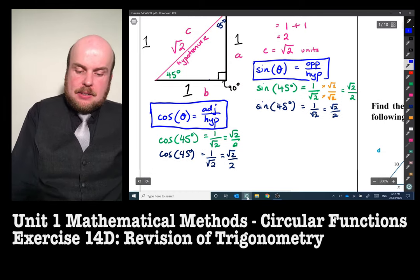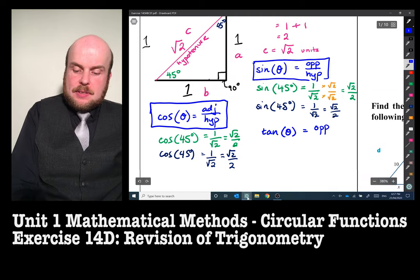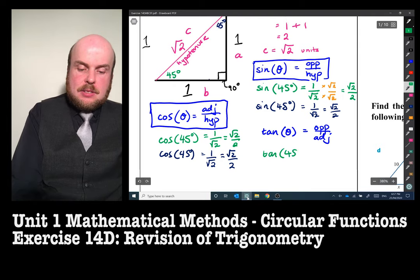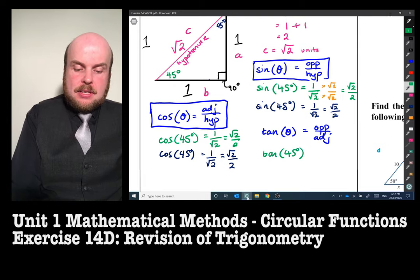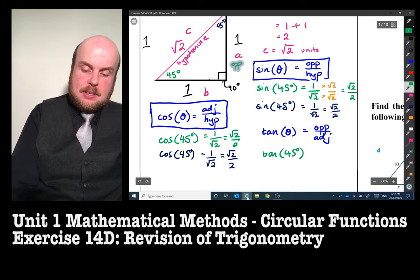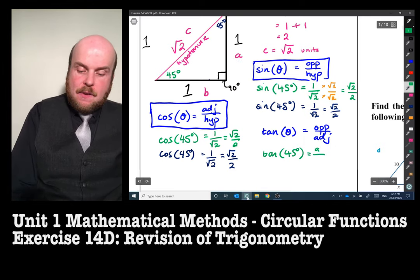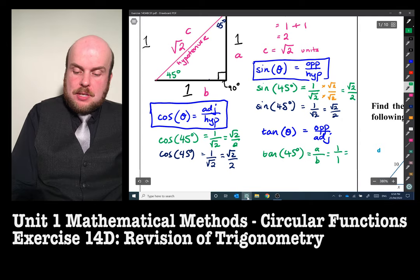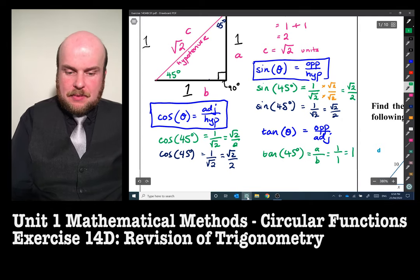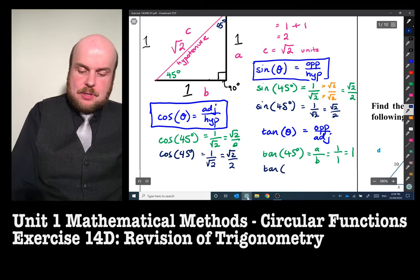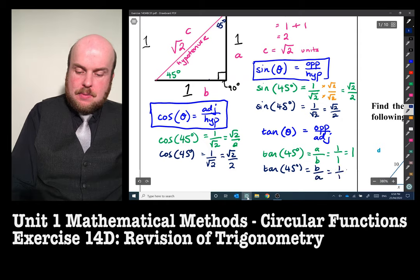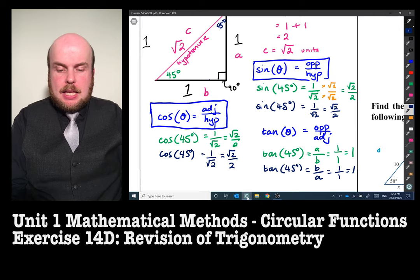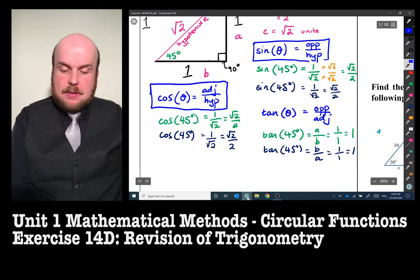And tan of theta is equal to opposite over adjacent. So for tan 45 degrees, the opposite here is a, so that's the opposite. I could label it like that so you can see. So this would be a over b. So this is one over one, which is one—can't do much simplifying than that. And then the other 45 degrees, the one at the top there in the dark blue, well it's going to be b over a, one over one, which is one. So there is our tan.